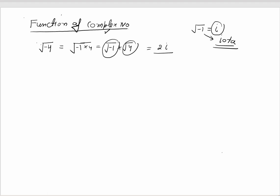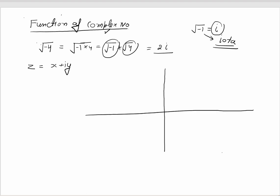A complex number is not only the iota part — it will have two parts. We represent this number as z, and it contains two parts: x plus iota y. Whenever you have any rectangular axis — called the complex plane — if there is a point x and y, you know that point p is there. x is the distance along the x-axis, and y is the distance along the y-axis.